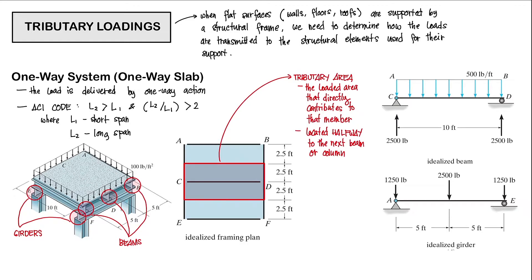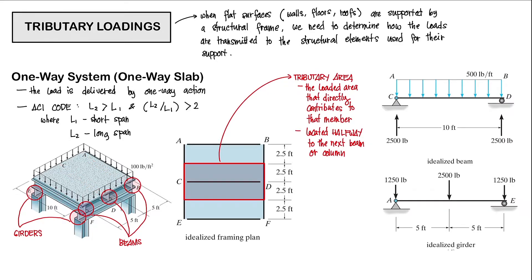These beams are supported by two girders: girder AE and girder BF. And these girders are supported by our columns — column E, column F, column B, and column A. It is important to know how your loadings are being transmitted. In our case, the load is being delivered by a one-way action, so the slab is only supported in one direction by these beams. It is safe to assume that this is a one-way system.